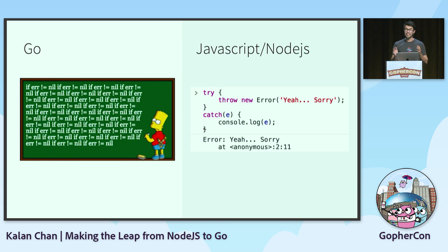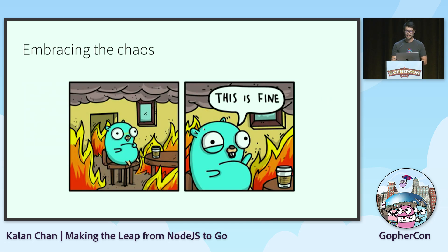I was also really confused about why we had to write an if statement all the time just to handle errors. No other language does this — there's always a try-catch system. But soon after, as I wrote more and more Go, I realized that this is normal, this is the way it is, and I just have to embrace the chaos because there's always meaning in the madness.